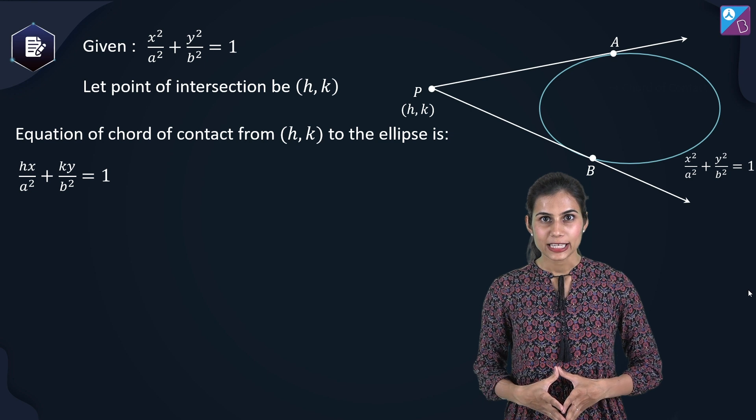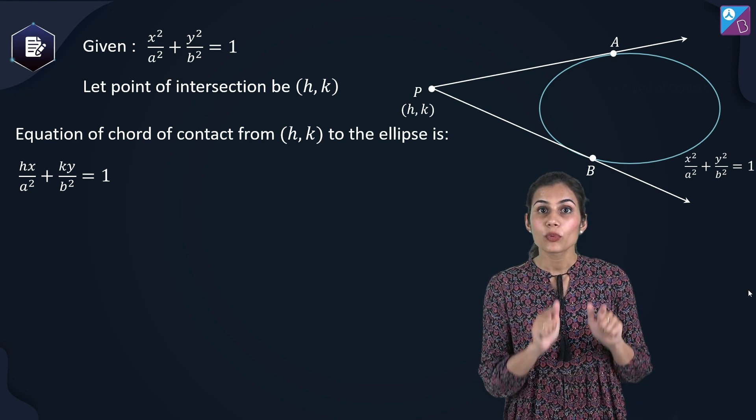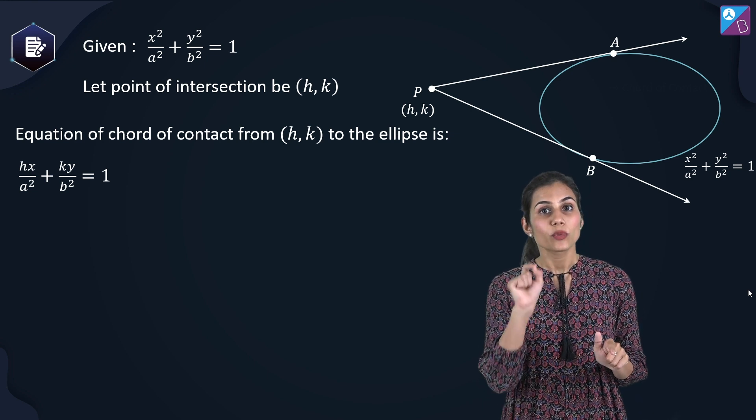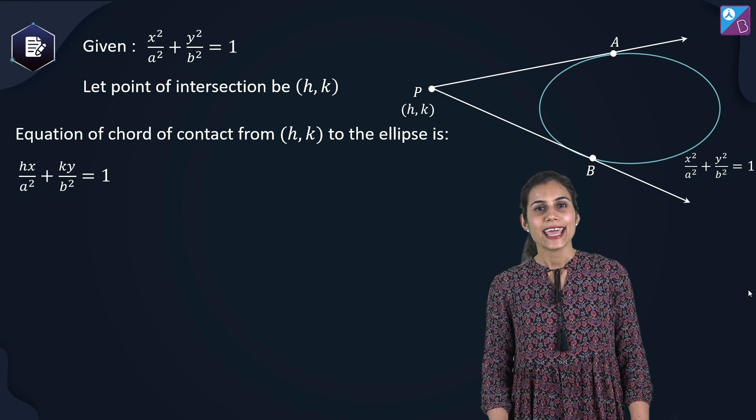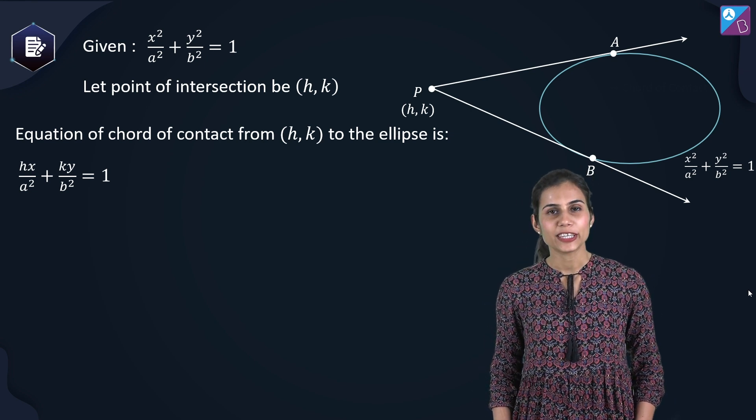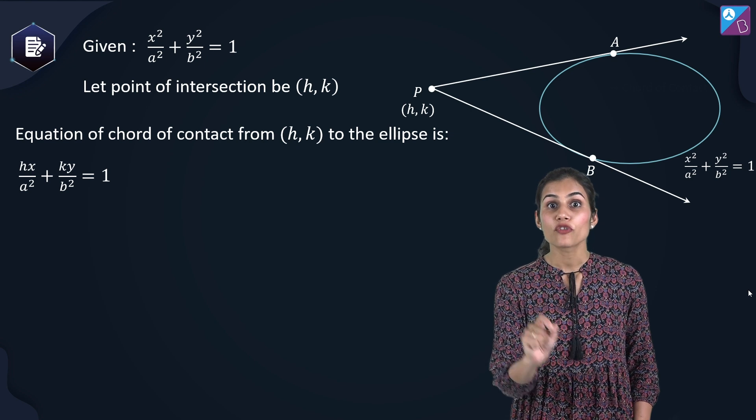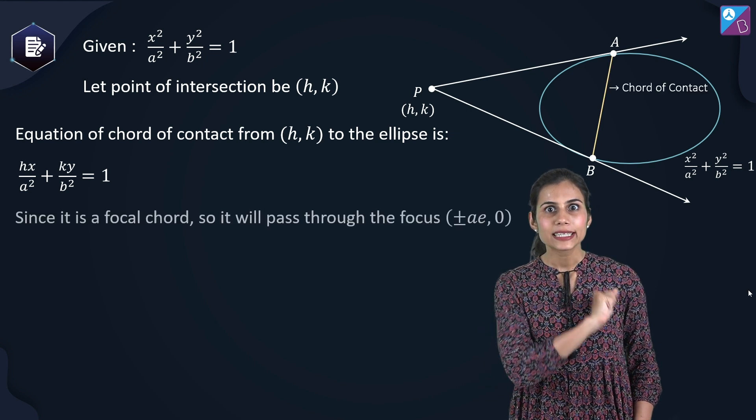So in the equation of my ellipse, I am going to replace x square with x, h and y square with y, k. What will I get? x, h by a square plus y, k by b square equals one. This is the equation of my AB chord.